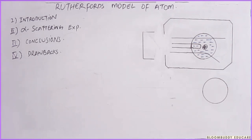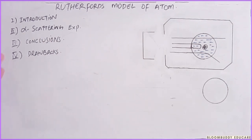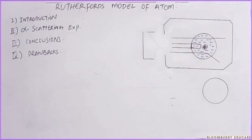Hello everyone, I am Dr. Tasvettuk Hussain and today's lecture is about the Rutherford model of atom. In this lecture, I will divide it into four different parts: first, the introduction; second, the alpha scattering experiment; third, the conclusions drawn from the alpha scattering experiment; and lastly, the drawbacks that the Rutherford model of atom has.